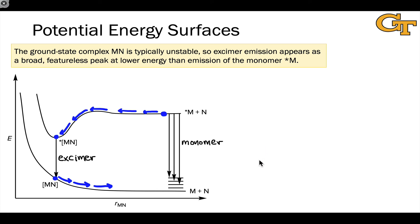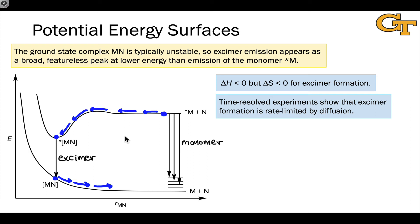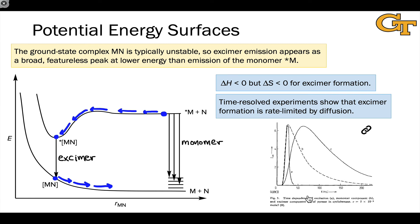A couple of other points about exomers and exaplexes. Typically, the enthalpy change associated with exomer formation is negative because of the spreading out of the excitation energy and orbital energy effects. However, the entropy change is also negative because we are taking two molecules and making one out of them. So exomer formation should be disfavored at relatively high temperatures where the entropy term becomes important. Another important point is that time-resolved experiments often show that exomer formation is rate-limited by the rate of diffusion — in other words, the frequency of diffusional encounters between M and N. That can be shown through data like this.